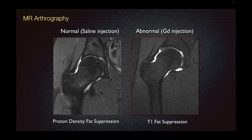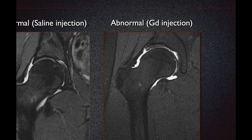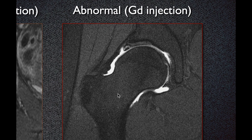If there is concern for labral pathology, MR arthrography can be performed for further evaluation. On the left-hand side, we can see a normal labrum showing a triangular hypointense band without signal abnormality within it. On the right-hand side, on T1 fat-suppressed imaging, we can see there is increased signal in the substance of the labrum consistent with a labral tear.